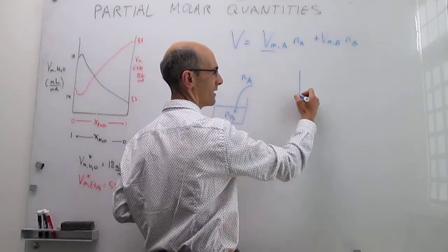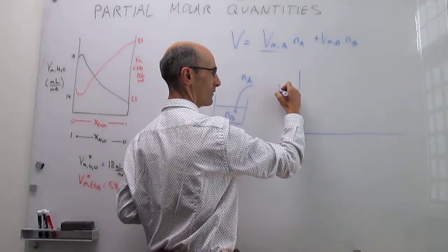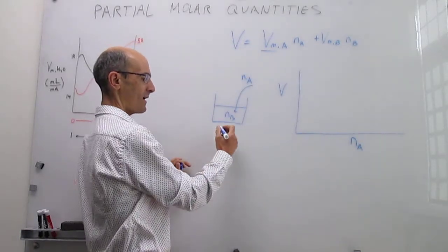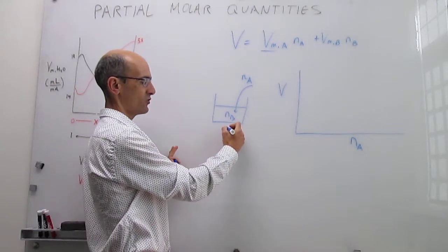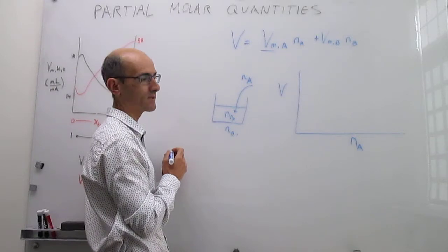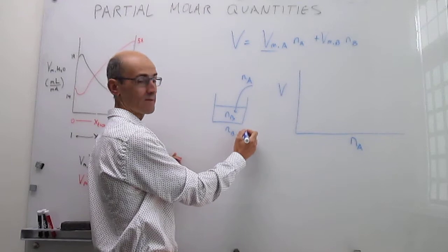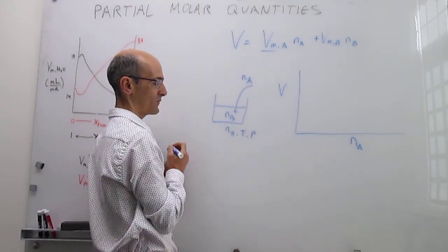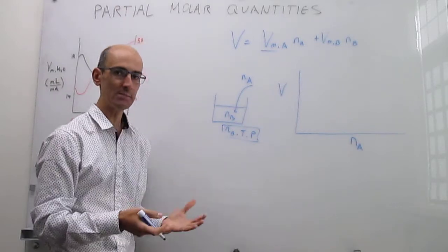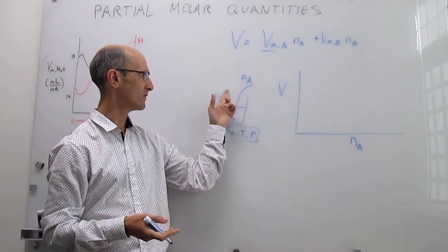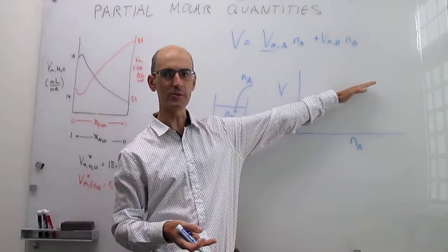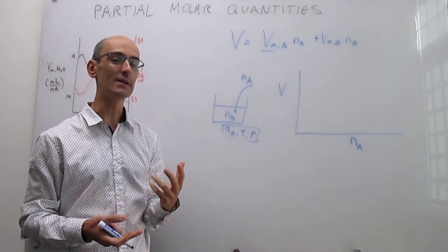Let's monitor that with a graph. The y-axis is the total volume of the mixture, and the x-axis is the number of moles of A being added, while all other variables are frozen — the number of moles of B is unchanged, temperature is constant, and pressure is constant. You would expect the volume to increase monotonously as you add A — a straight line always growing. But in reality, that is not always true; this line can have many shapes.